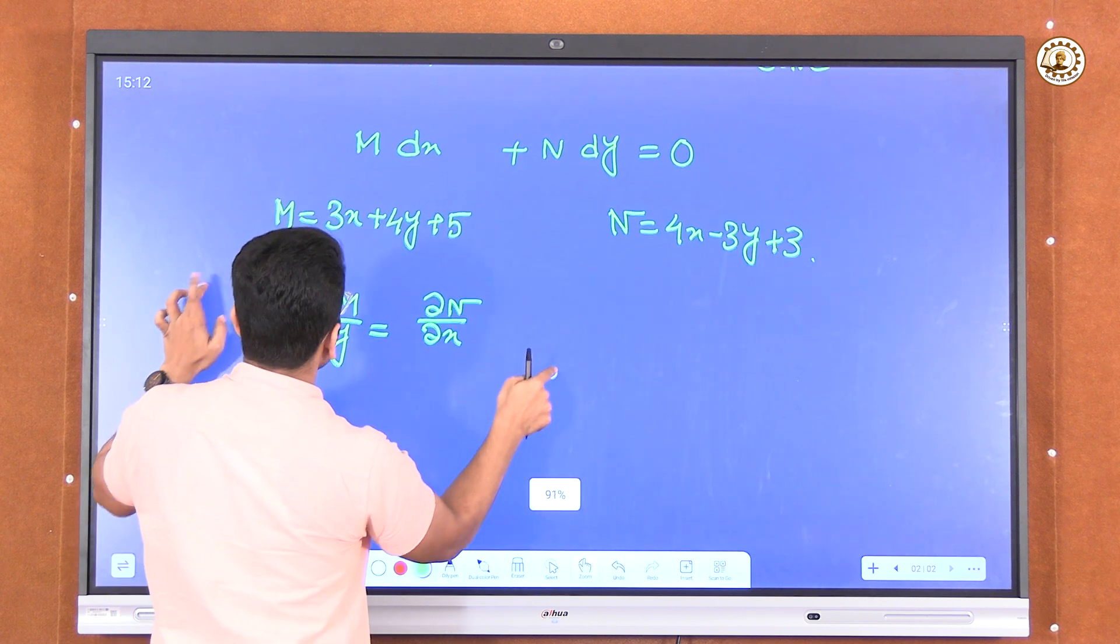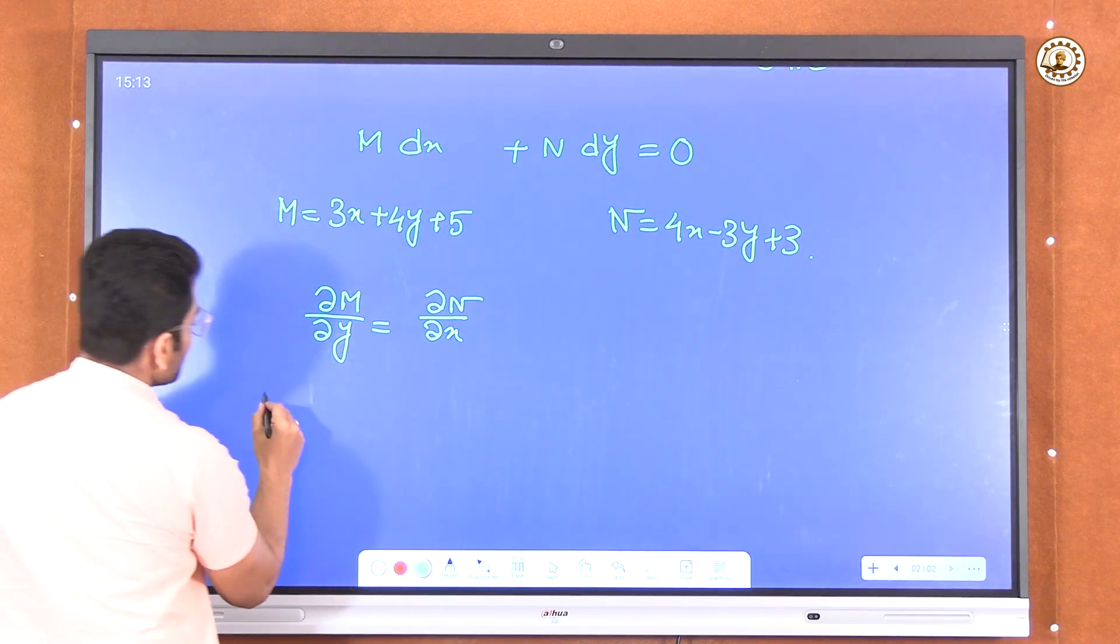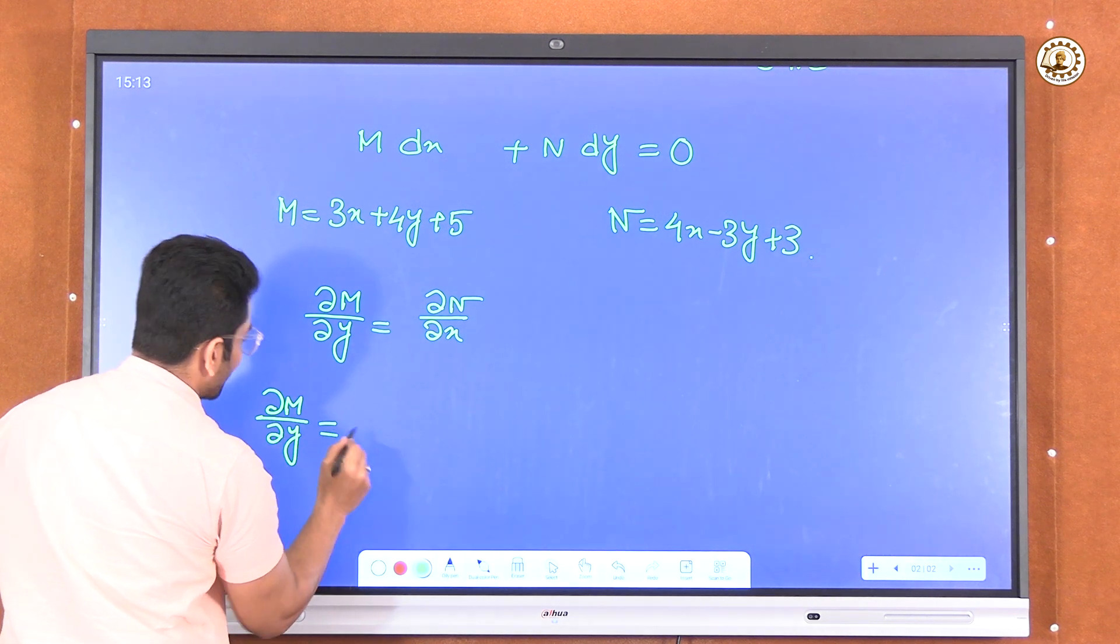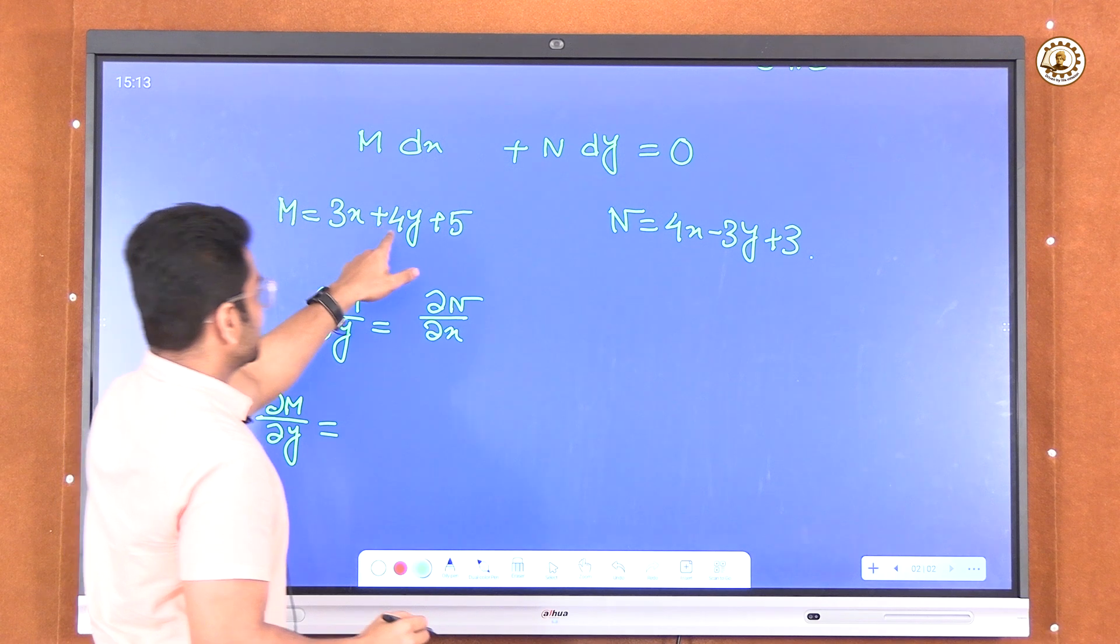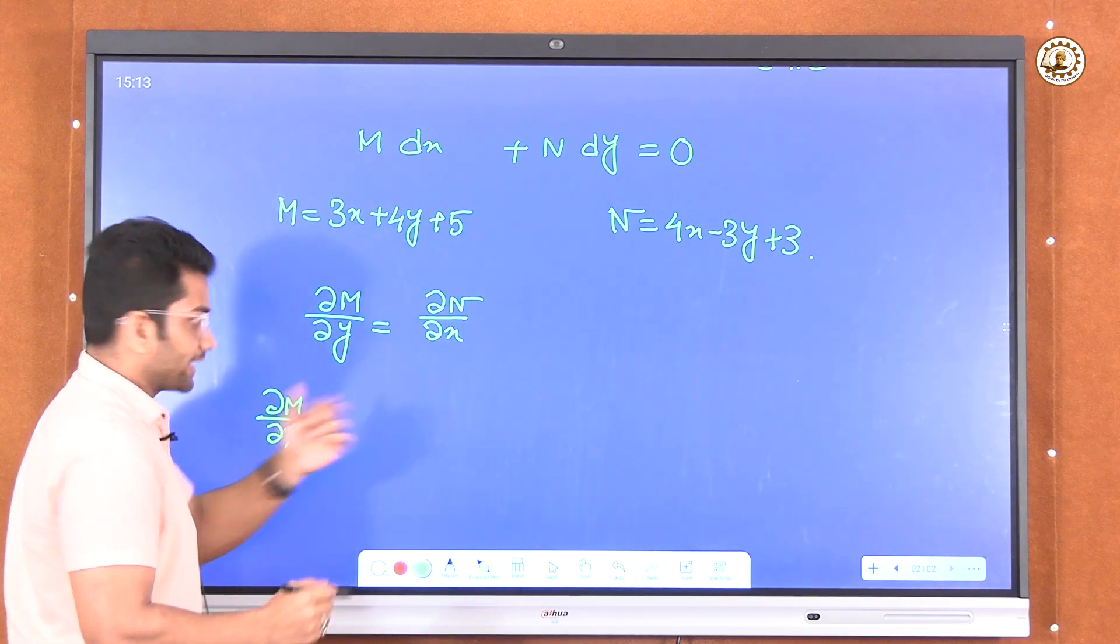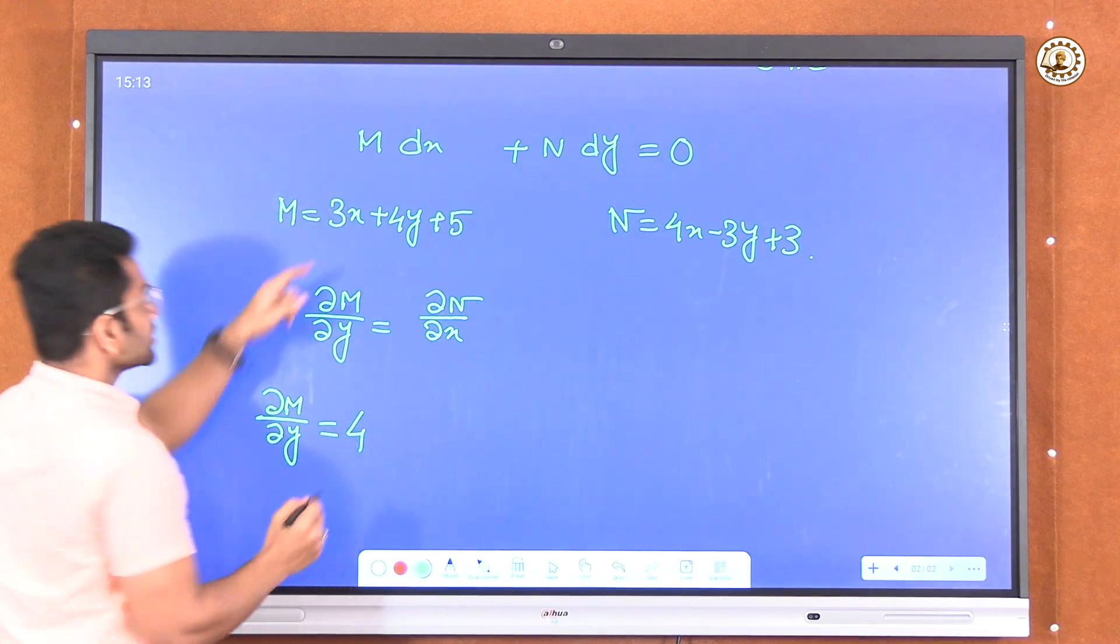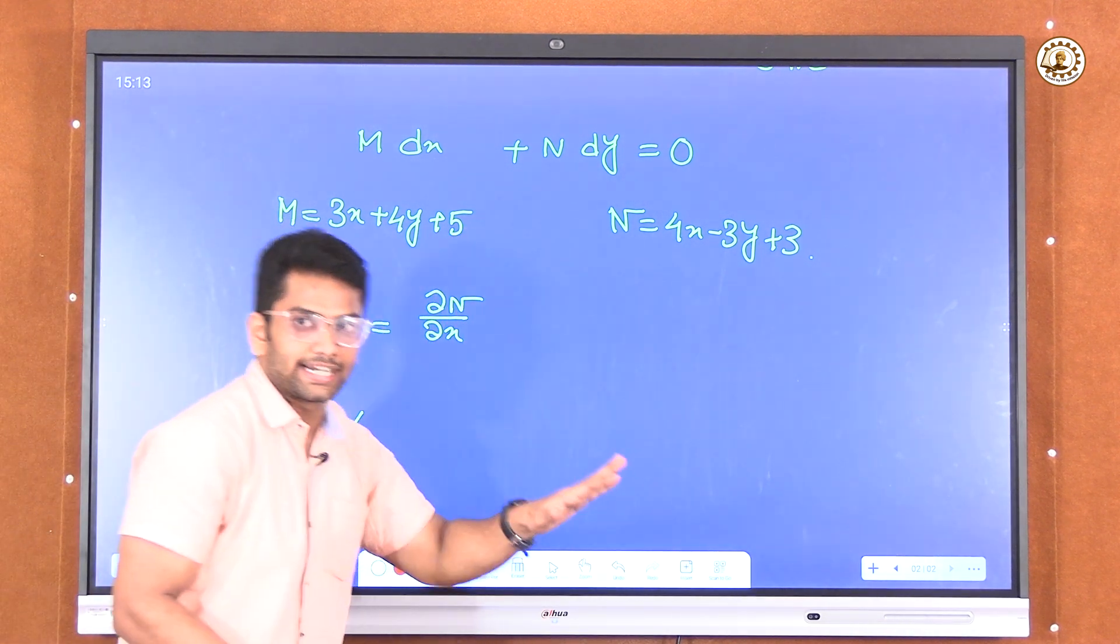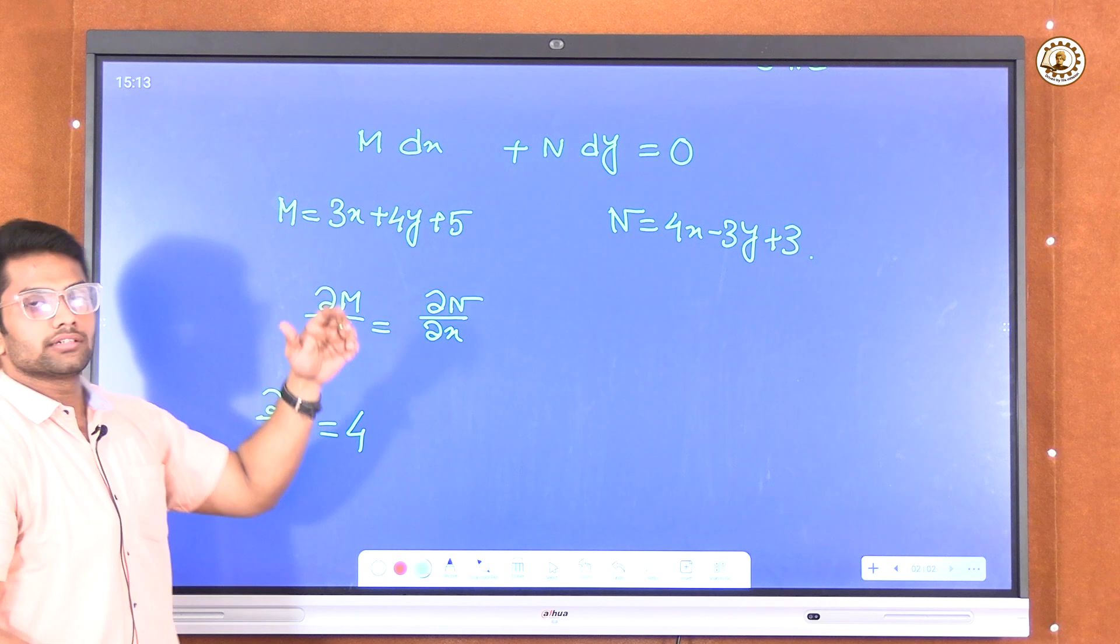So we have M, so ∂M/∂y is equivalent to, we have to take the partial derivative of M with respect to y, so it will be 4 because we have to treat the 3x part as constant and 5 is also constant, so the derivative of 4y will be 4.